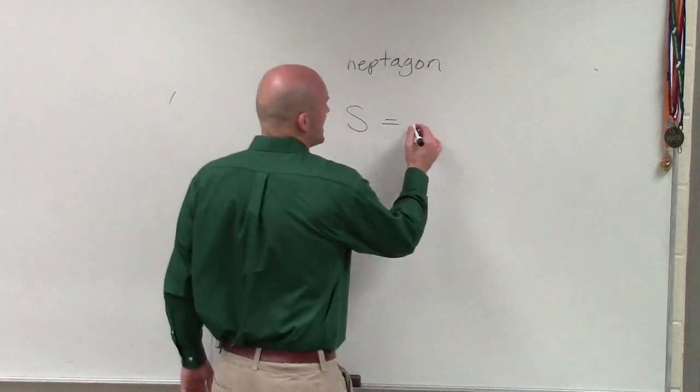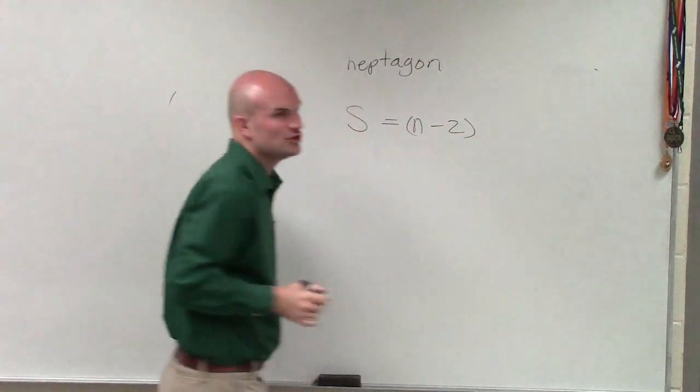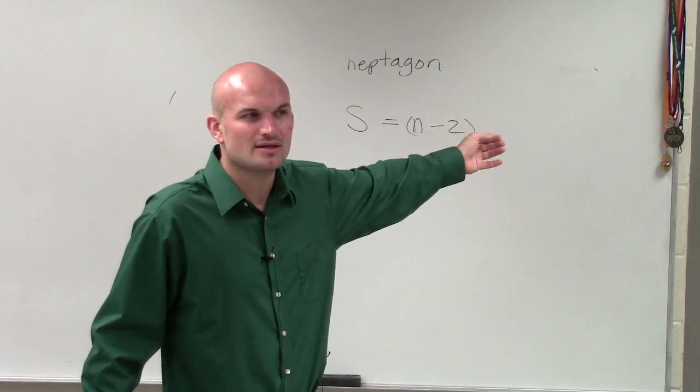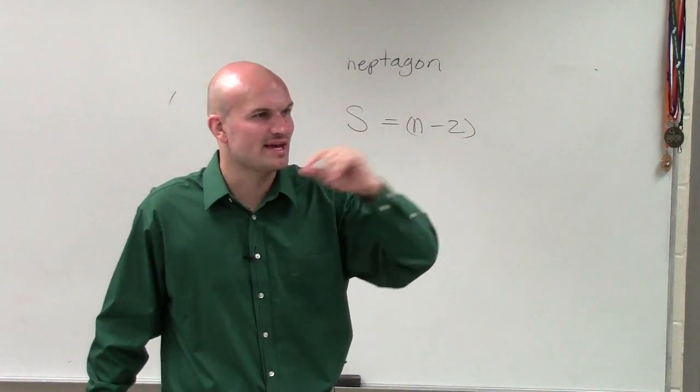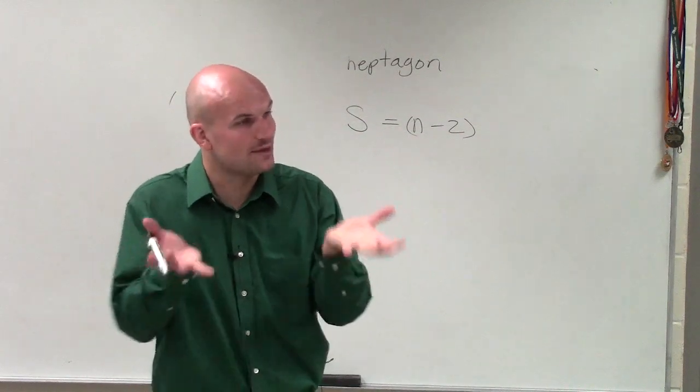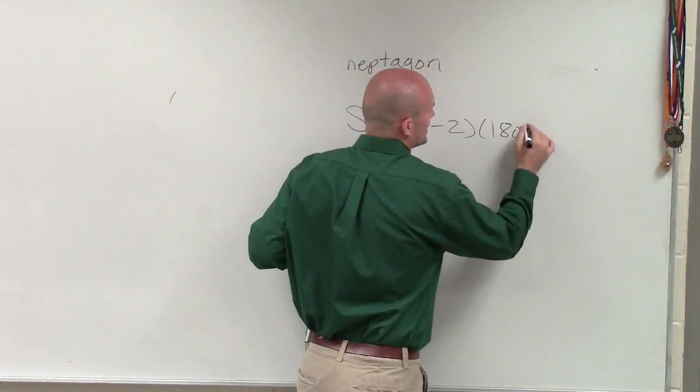Because what we found out was if we took the number of sides, which was n, and we subtracted it by 2, what did n minus 2 show us? That gave us the number of triangles we could make inside the figure, right? And then we multiplied that by 180 degrees.